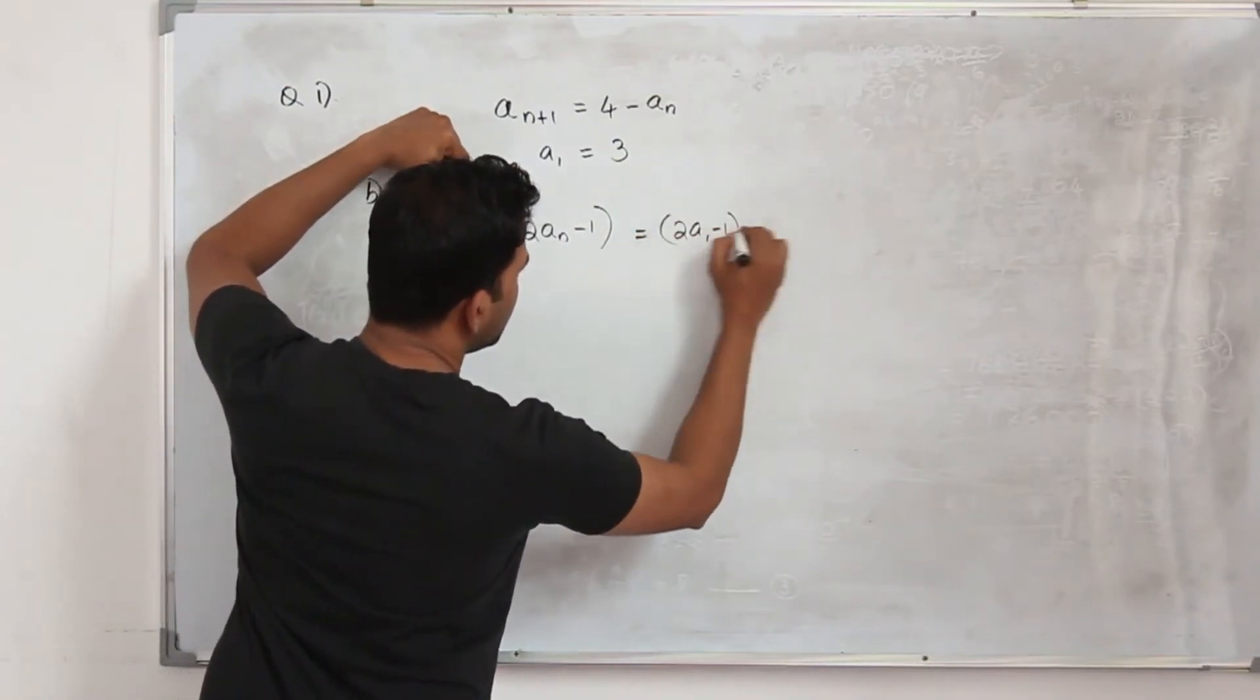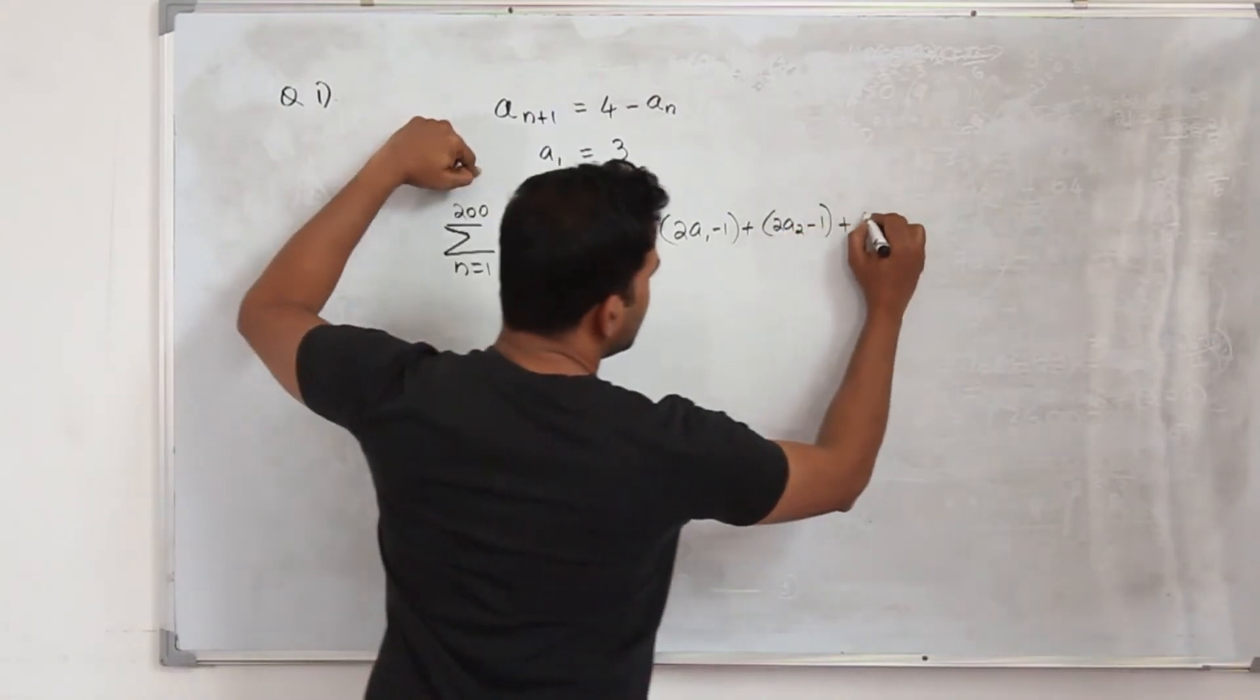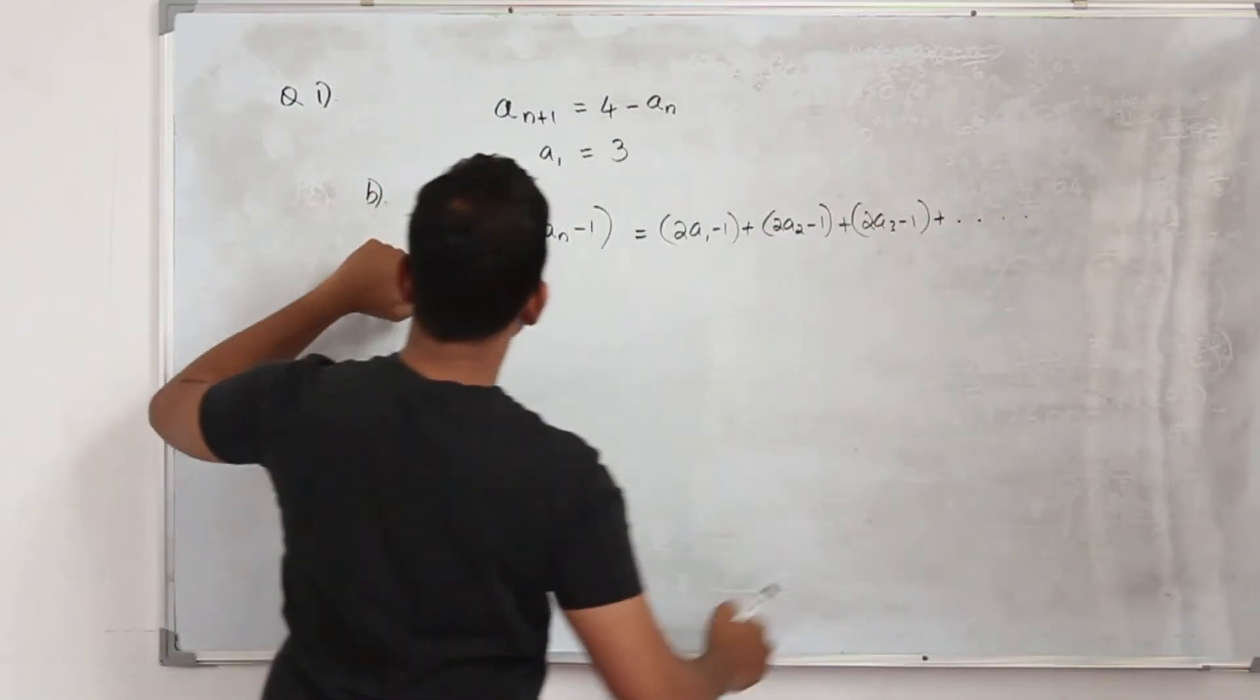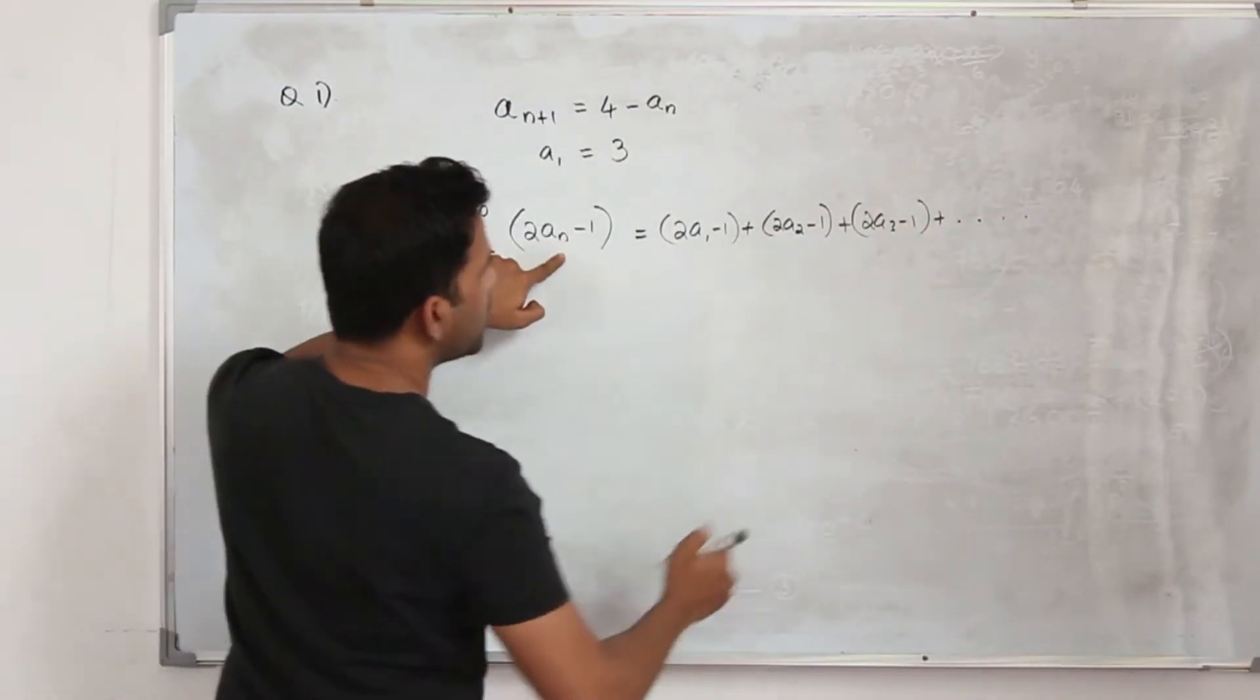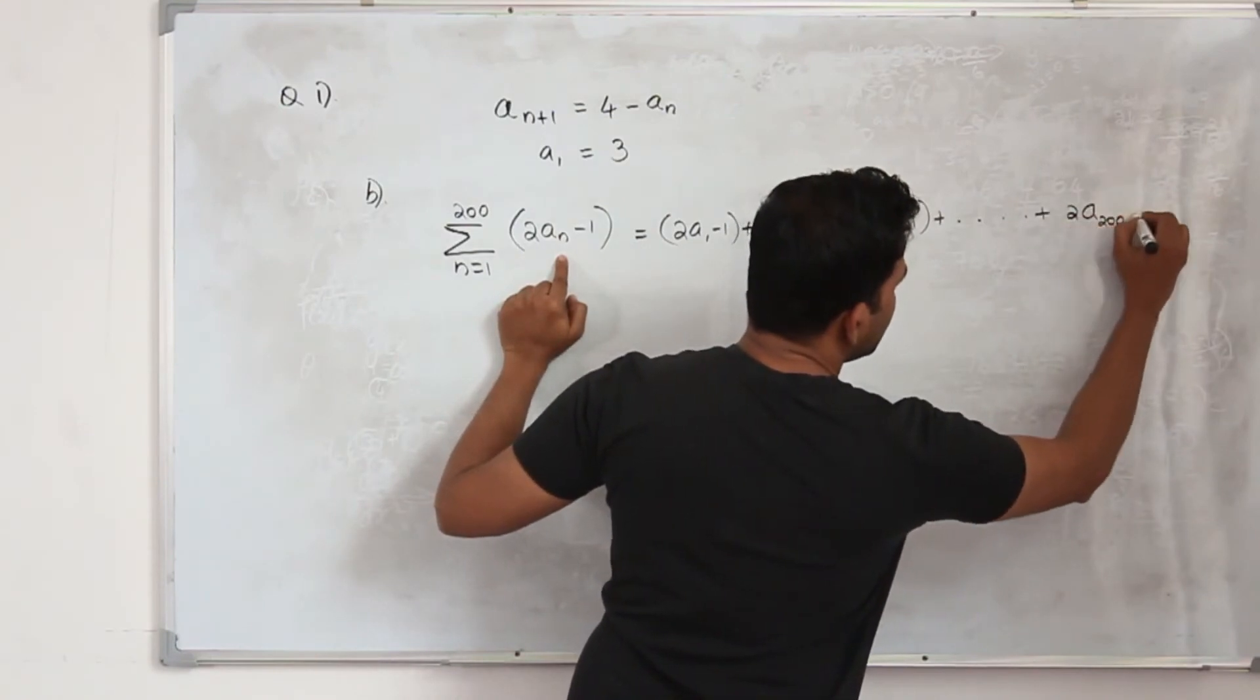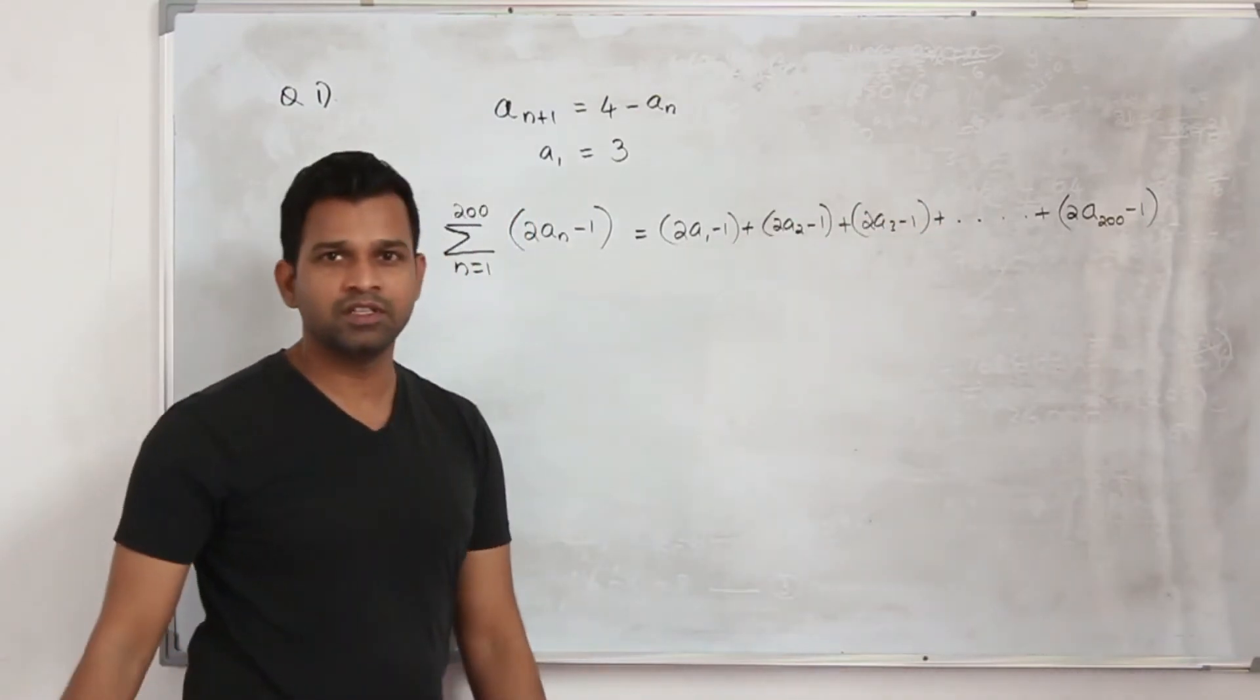When you substitute n equals 1, it's 2a₁. In other words, you can write it as 2a₁ minus 1 plus 2a₂ minus 1 plus 2a₃ minus 1, etc. You need to write it until a₂₀₀, so 2a₂₀₀ minus 1. So there are 200 terms in this series.